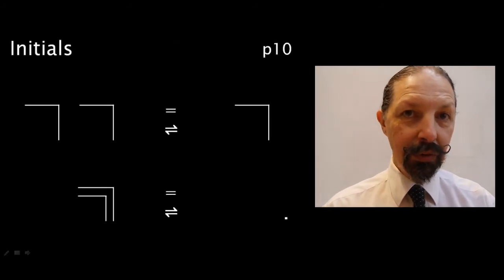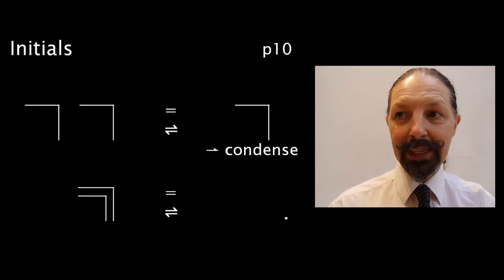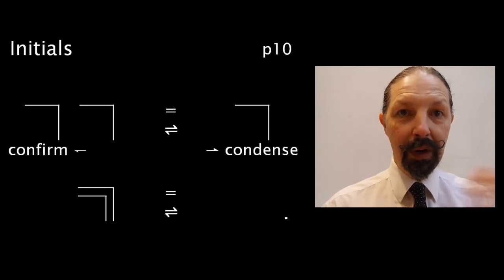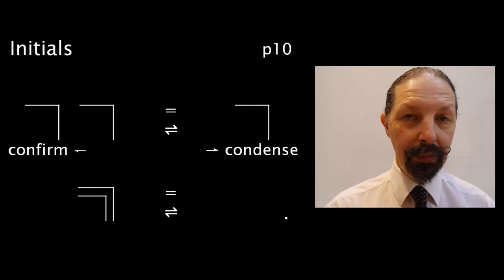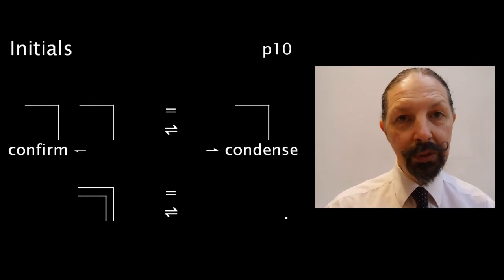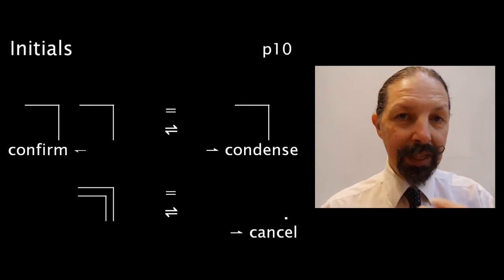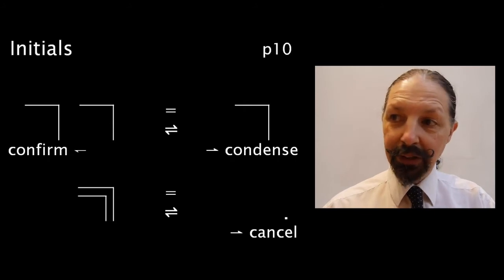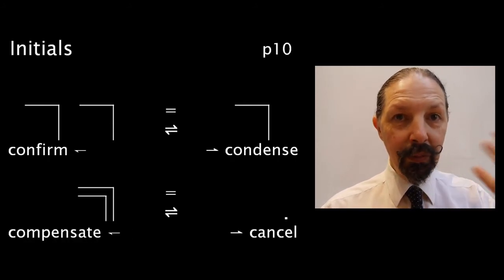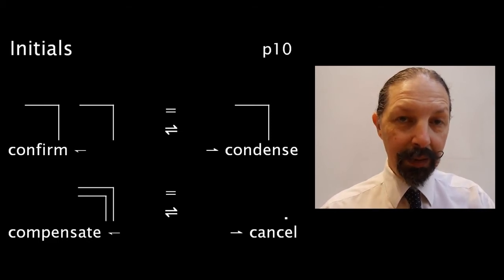We met the initials already, and we learned how to condense two marks into one, and how to confirm one mark as a multiple of marks having the same value. We learned also how to cancel two nested marks, because they're equivalent to the blank space in which they appear, and that means that we can make a compensatory act by adding them in wherever there is a blank space, wherever we want to.